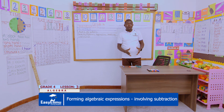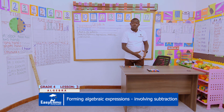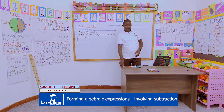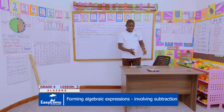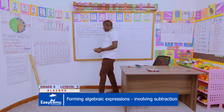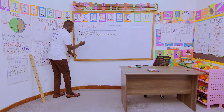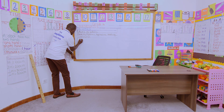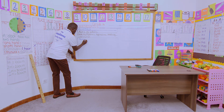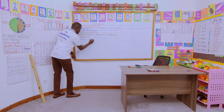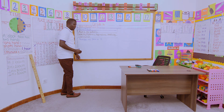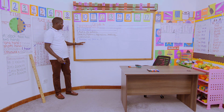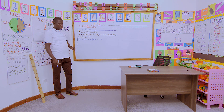I have a number of pens. I would like us to represent pens using a letter. We represent pens using the letter P. So the number of pens we have — the number of pens — will be shown by letter P.